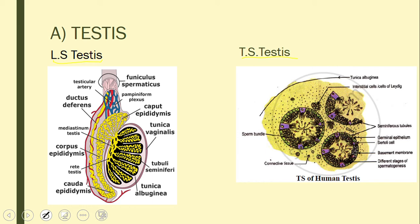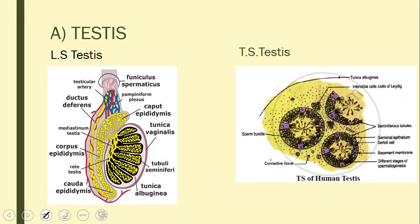The testis has several coverings. The outermost is the tunica vaginalis, above which is an incomplete covering called tunica vasculosa. The most important covering is the tunica albuginea, which divides the entire testis into 200 to 300 lobules. Each lobule contains 2 to 3 seminiferous tubules.